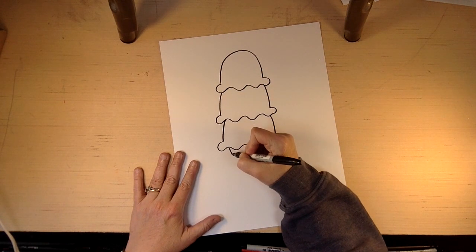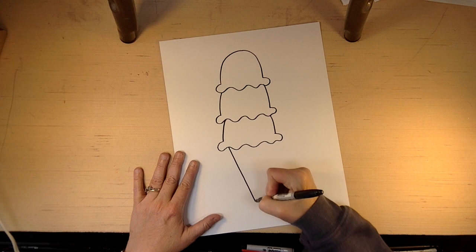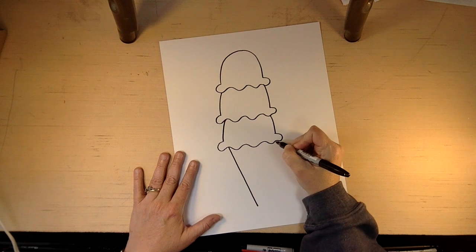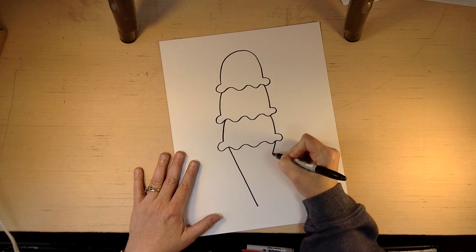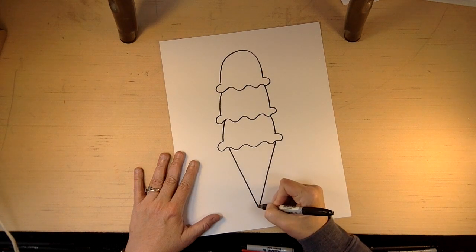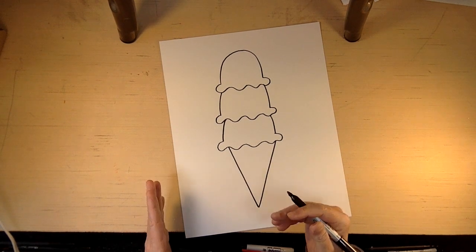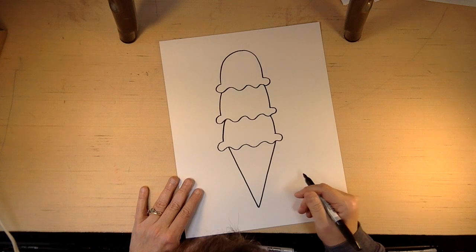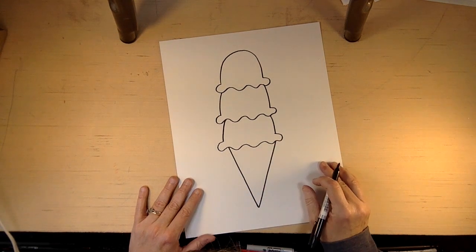Then we're going to draw a cone. So we're just going to draw, I think this is kind of like the waffle cone, or I'm not sure. I think the one that has the flat bottom is called the sugar cone. But we're going to draw a cone that comes to a point.